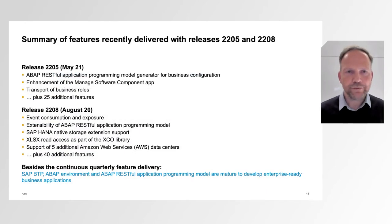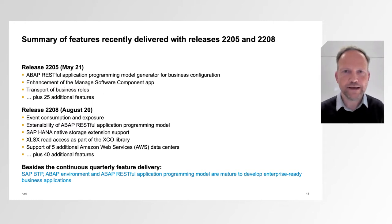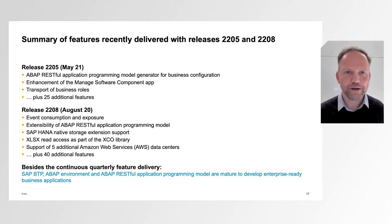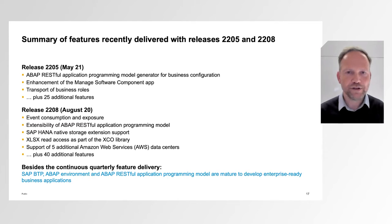In the May release, we delivered an extension of the RAP generator for business configuration, enhanced the Manage Software Component app for lifecycle management, and added the option to transport business roles. In the August release, we delivered event consumption and exposure, extensibility for the ABAP RESTful Application Programming Model, and we are now making use of the HANA native storage extension.